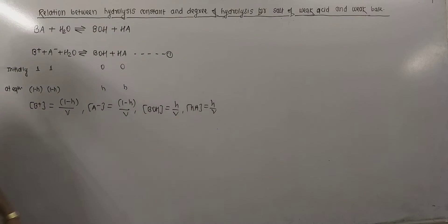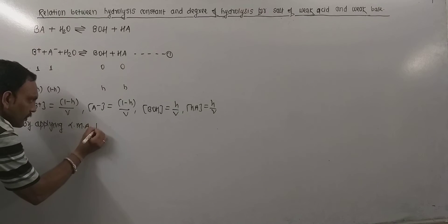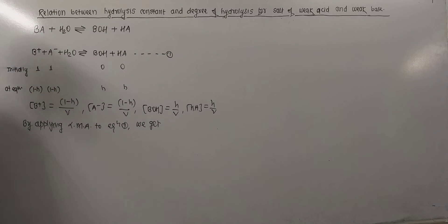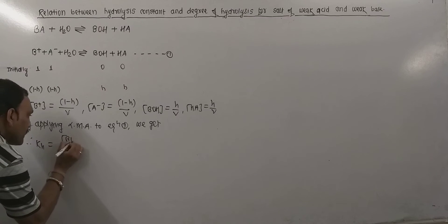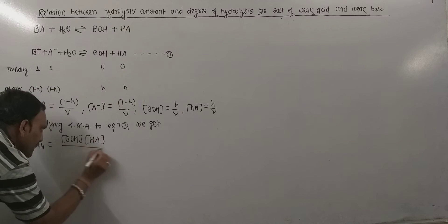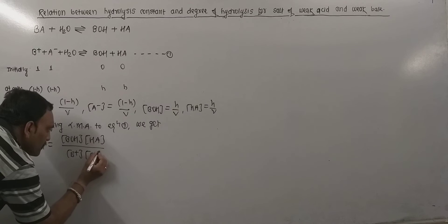So by applying law of mass action to equation 1, we get the hydrolysis constant, that is KH. So KH equals concentration of BOH times concentration of HA upon concentration of B+ times concentration of A-.